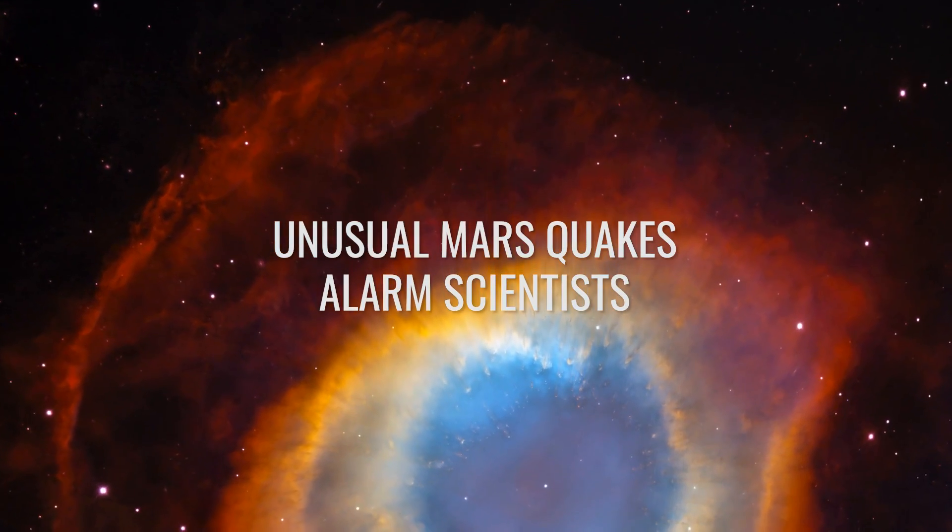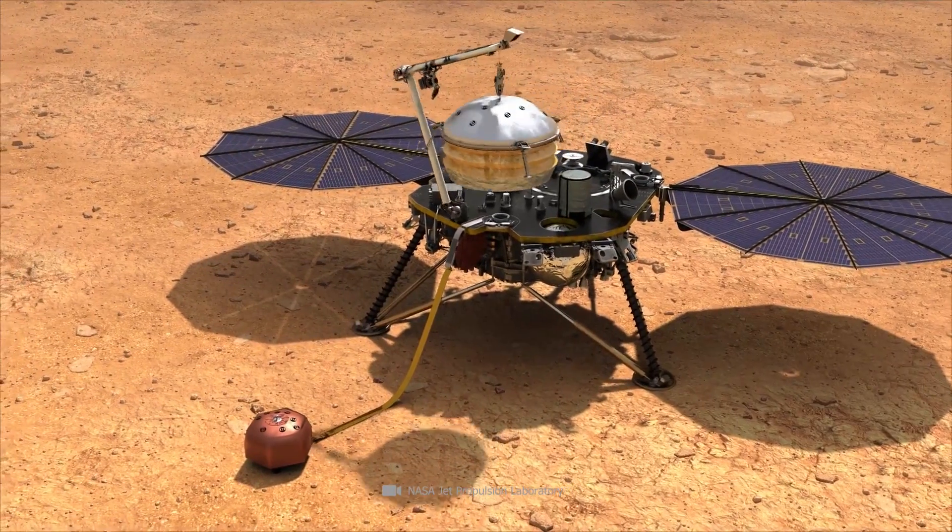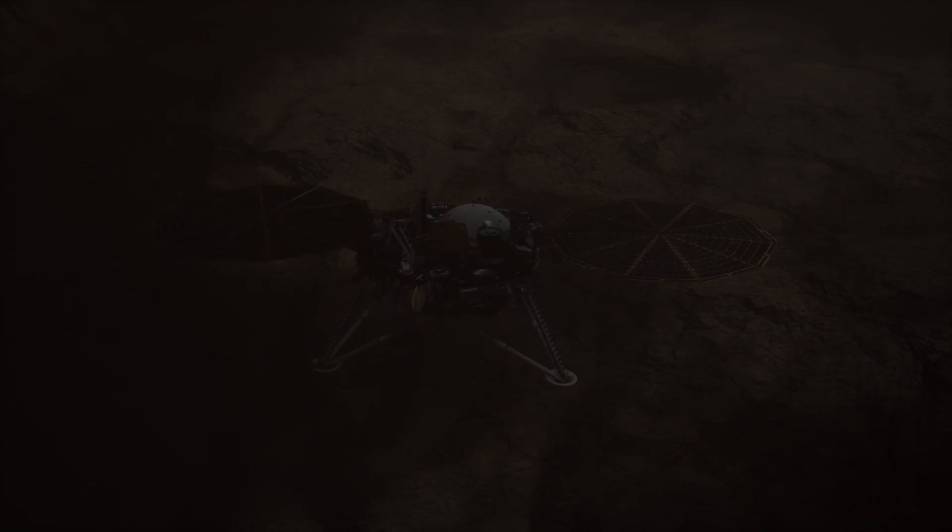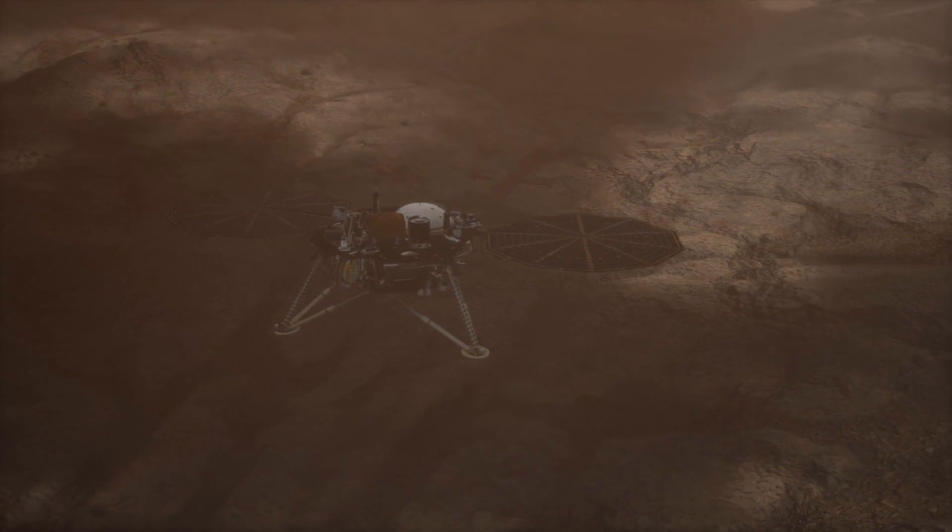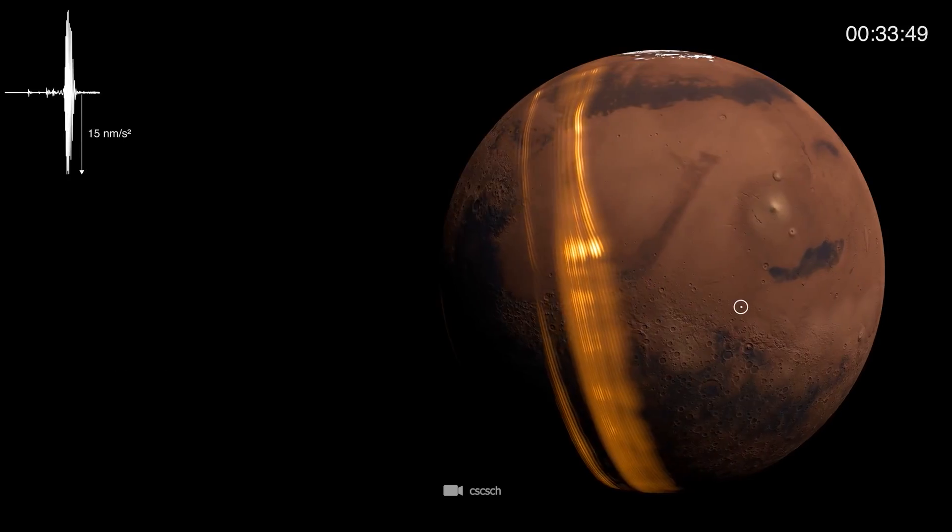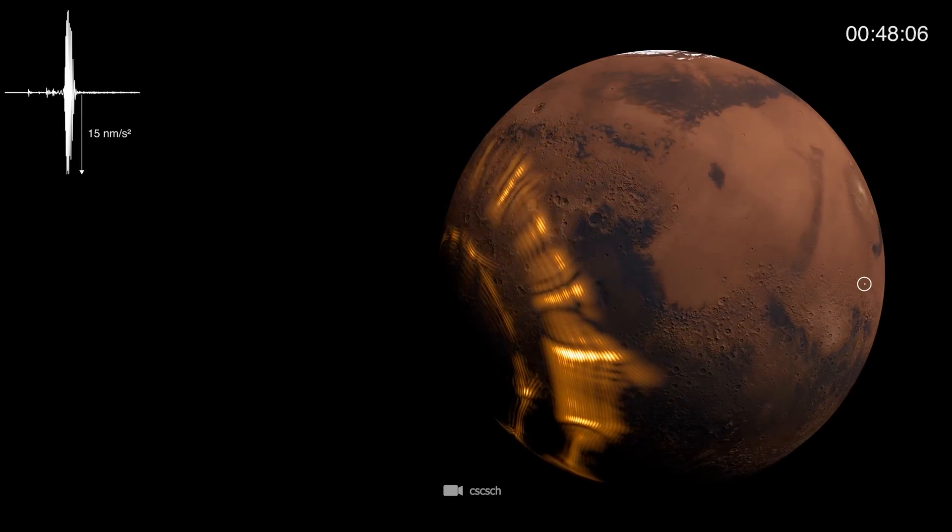Unusual Mars Quakes Alarm Scientists. During its four-year active phase, InSight detected hundreds of Mars quakes. But it wasn't until 2021 that things got really interesting. That year, InSight documented two unusual quakes on the opposite side of the planet.